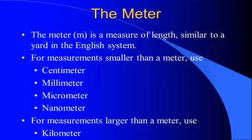The meter is a measure of length similar to a yard in the English system. For measurements smaller than a meter, we use the centimeter, which is about the width of your pinky finger; a millimeter, about the width of a pencil lead, one-tenth of a centimeter; a micrometer, that's one-millionth of a meter, or one-thousandth of a millimeter; and the nanometer, which is one-billionth of a meter, or one-thousandth of a micrometer. For measurements larger than a meter, we typically use a kilometer, and to ballpark it, a kilometer is just a little bit more than half a mile.